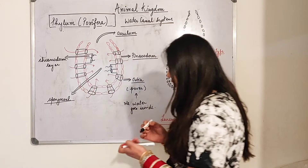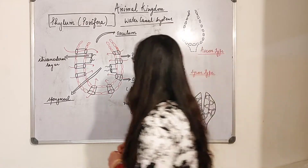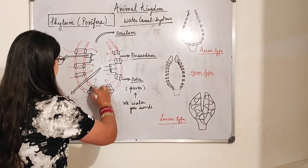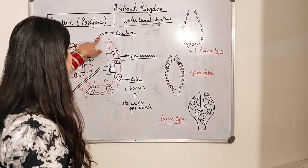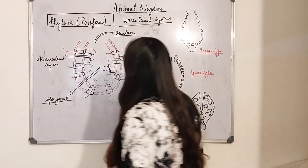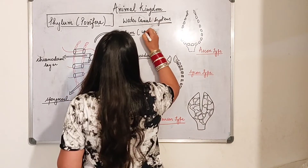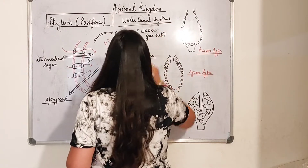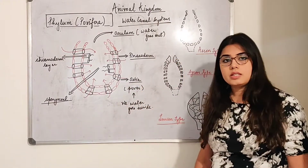The water goes inside through these pores, also termed as the ostia. You can see the red color arrows I have drawn — the water goes inside through these ostia. And there is an opening here — this is known as the osculum. Through this big pore the water goes out. So the exit of water happens via the osculum and the entry of water inside the body happens through the ostia.